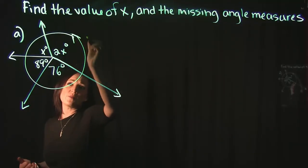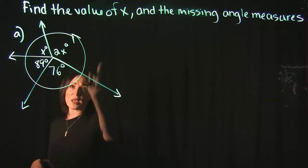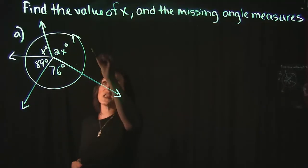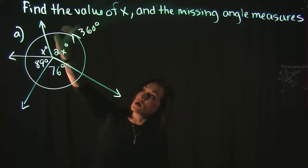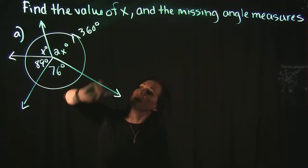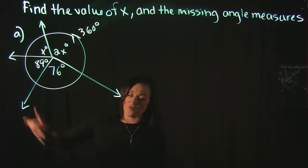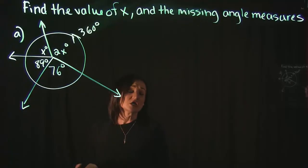What we should hopefully know about a circle is the total angle measures or the total degrees within a circle is 360 degrees. So if I go completely around this, I know that every single one of these angles that forms this full circle here should add up to 360 degrees.